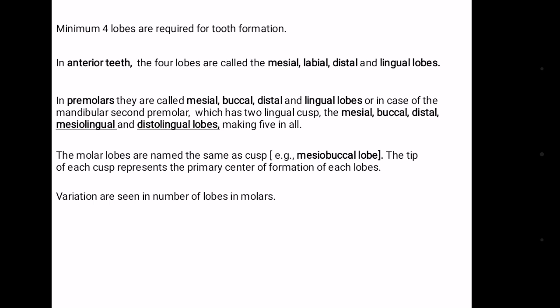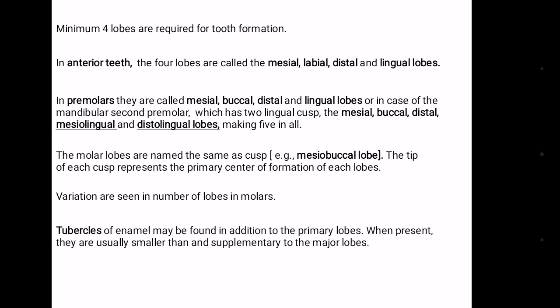Variations are seen in the number of lobes in molars. Tubercles of enamel may be found in addition to the primary lobes. When present, they are usually smaller than and supplementary to the major lobe.